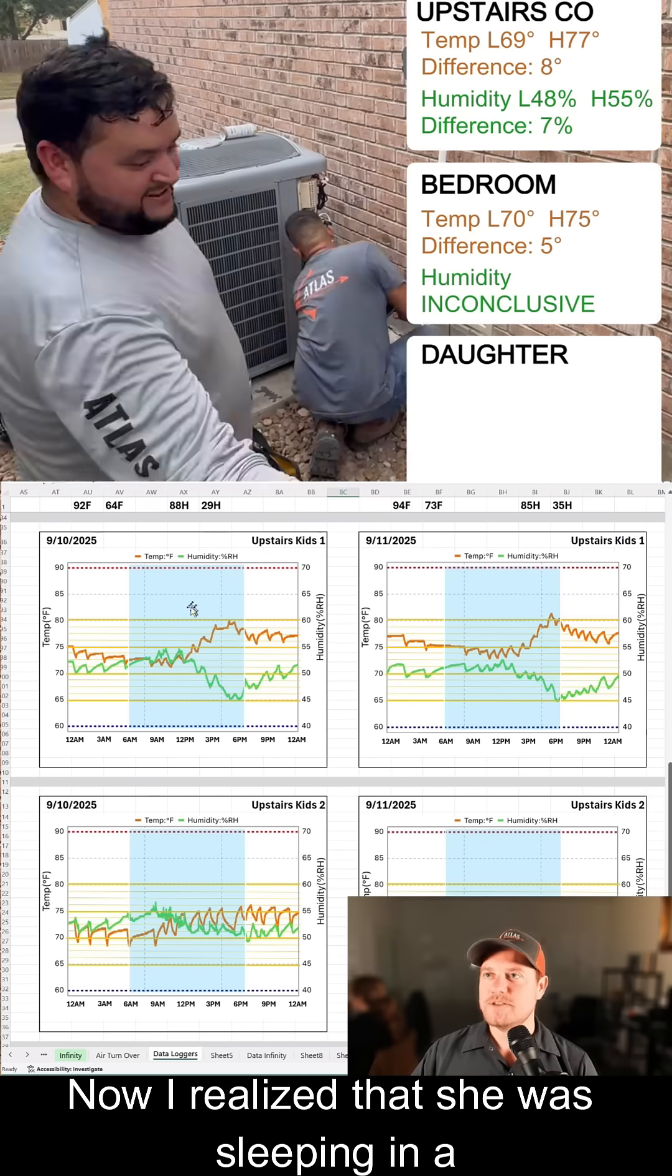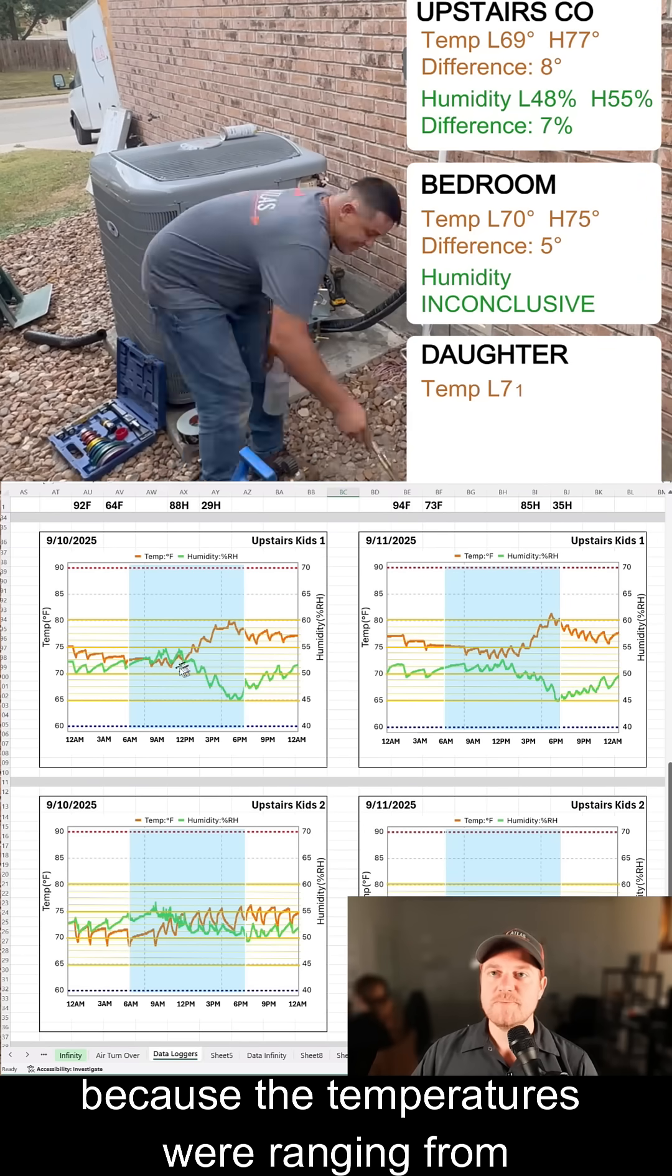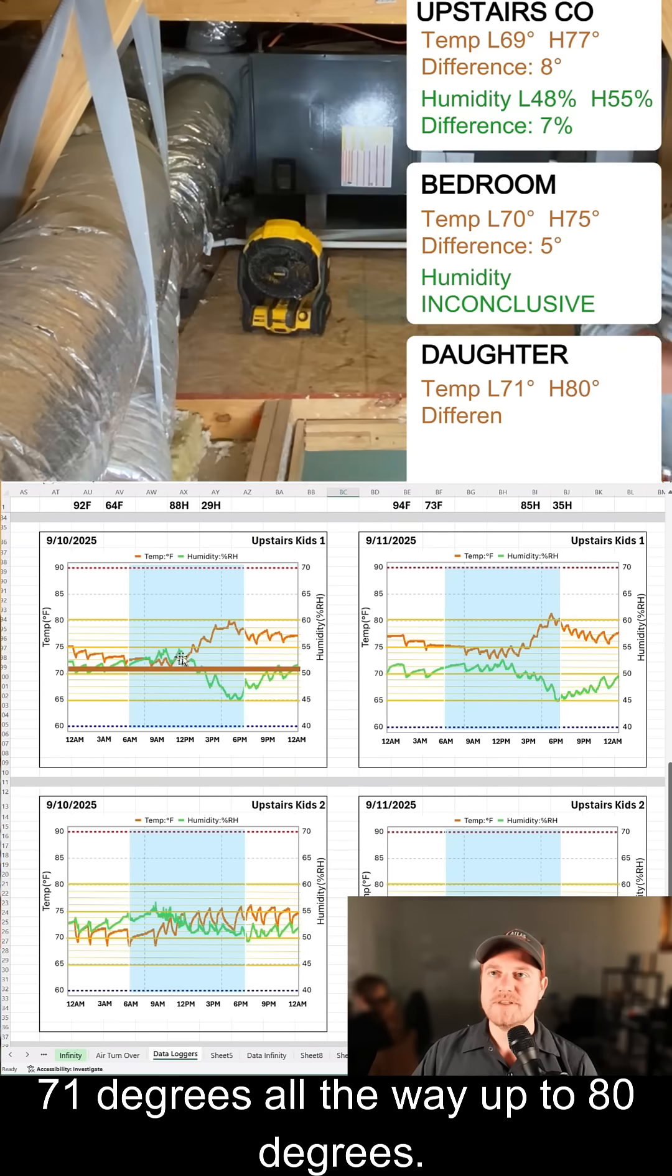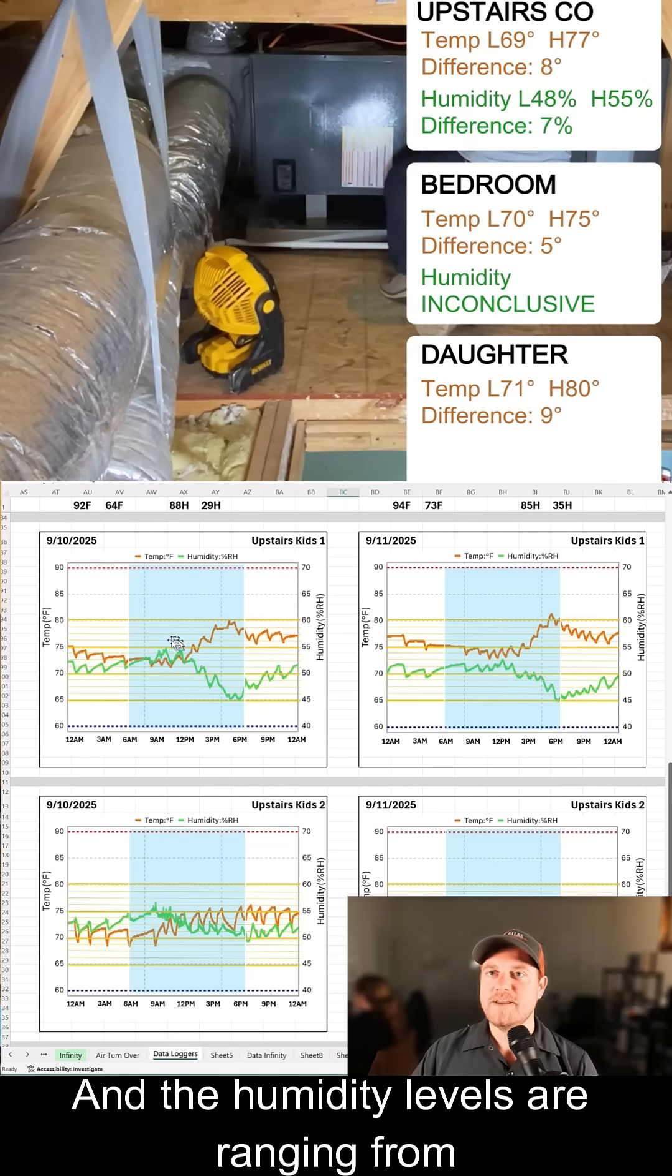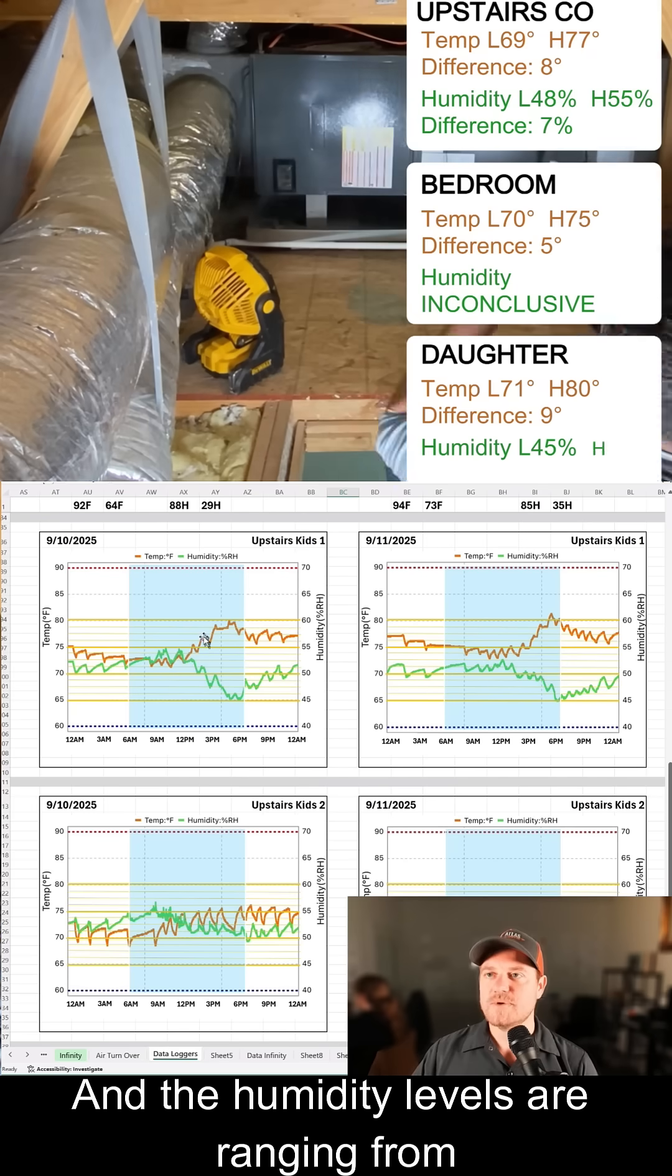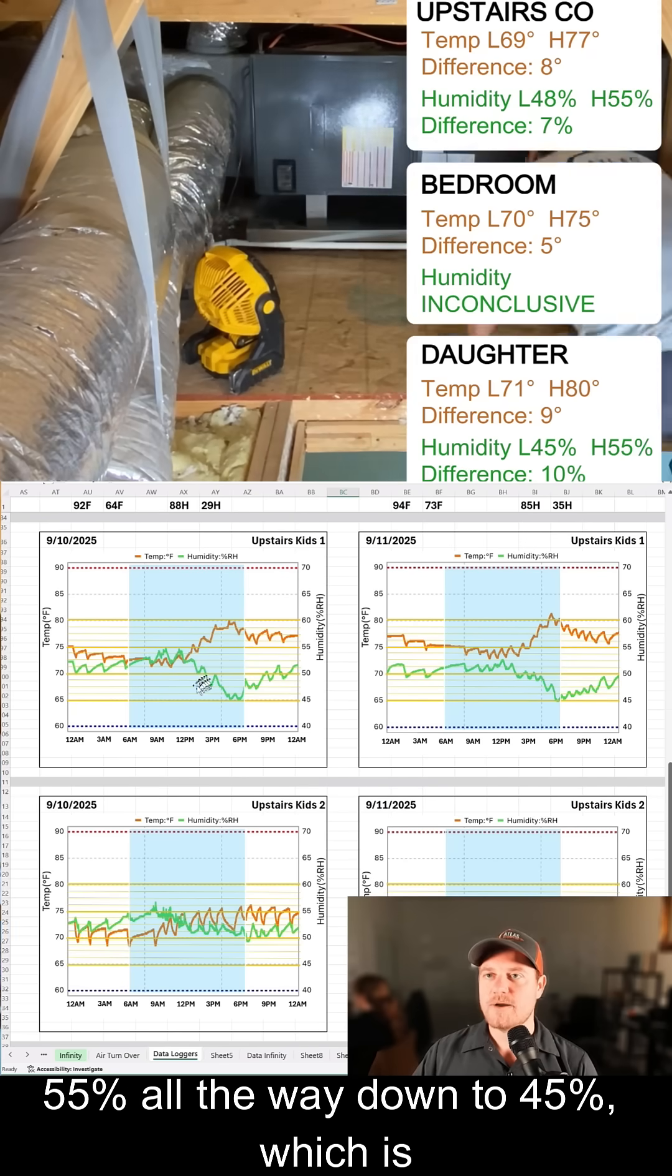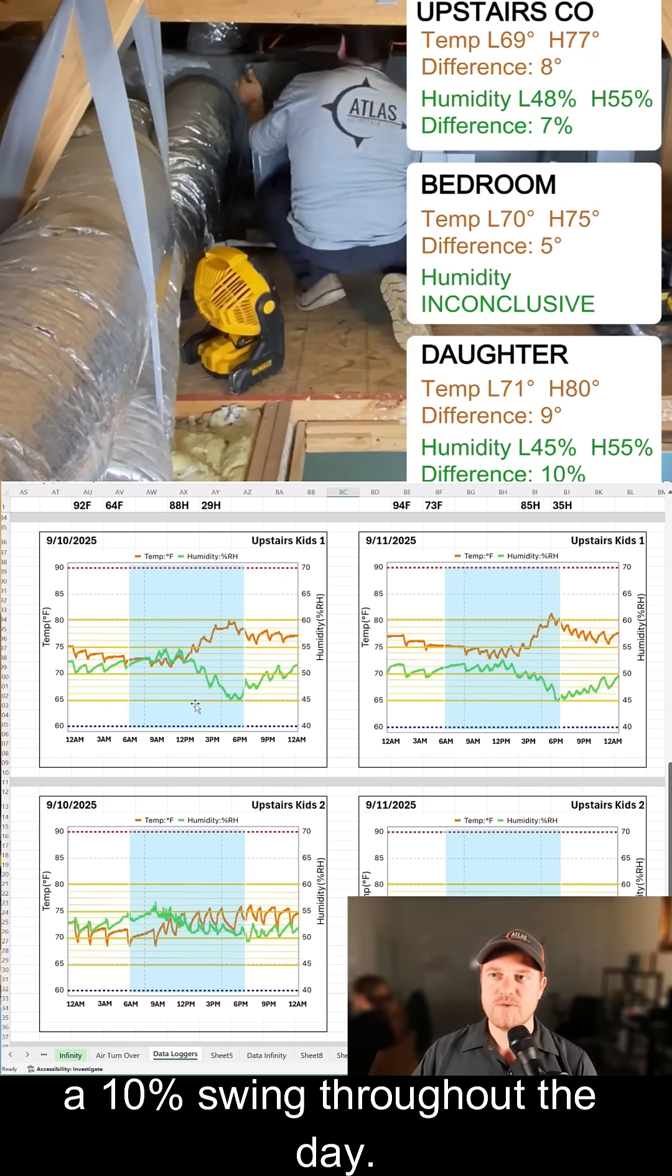Now I realize that she was sleeping in a torture chamber, because the temperatures were ranging from 71 degrees all the way up to 80 degrees, so around a nine degree difference throughout the day, and the humidity levels are ranging from 55 percent all the way down to 45 percent, which is a 10 percent swing throughout the day.